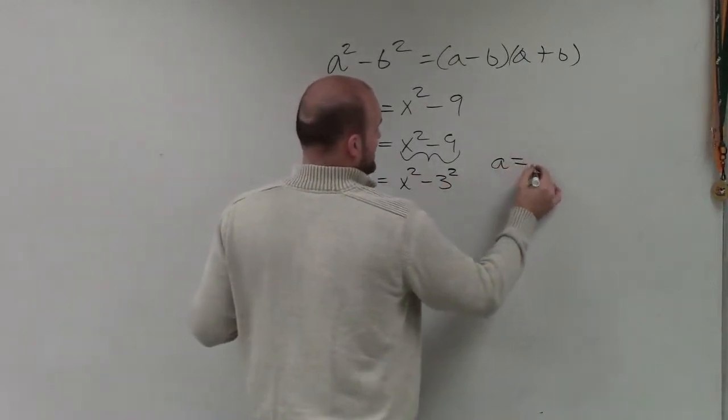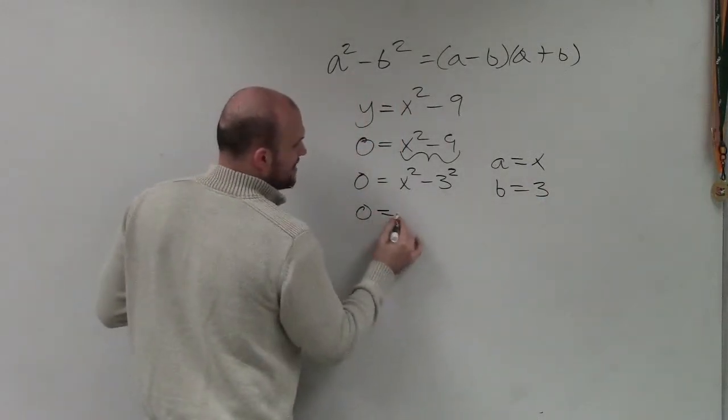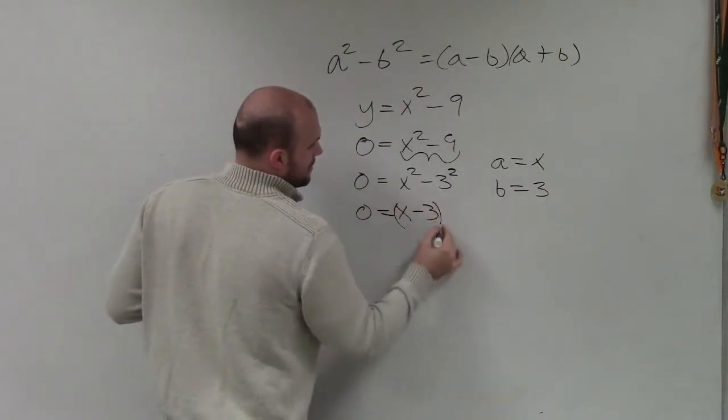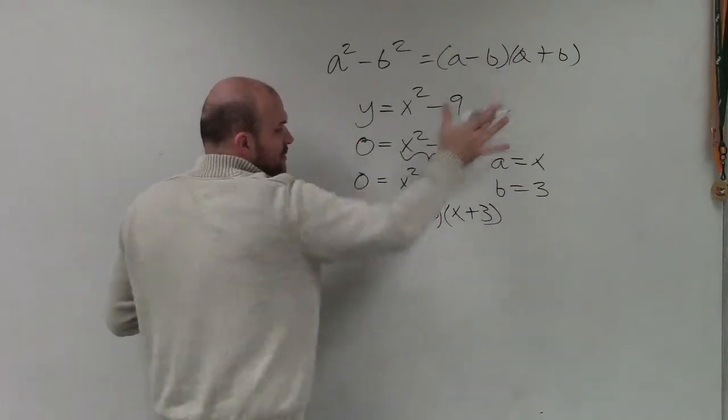Therefore, I can say a equals x and b equals 3. Now, I can write this in my factored form based on the property for difference of two squares.